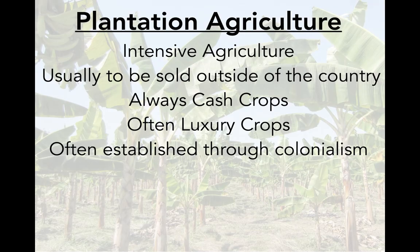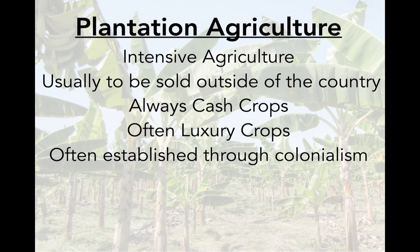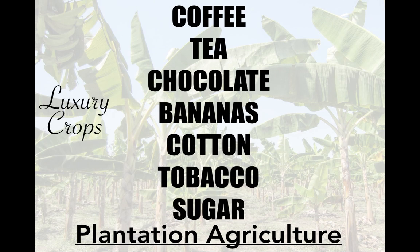The next type of agriculture we're going to discuss is plantation agriculture. This is a form of intensive agriculture that produces crops usually to be sold outside of the country, always produces cash crops, often luxury crops, and is often established through colonialism and imperialism. Some examples of plantation crops are coffee, tea, chocolate, bananas, cotton, tobacco, and sugar — all of which are classified as luxury crops.